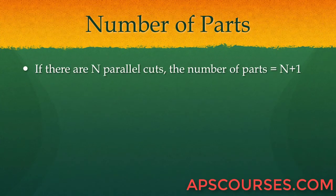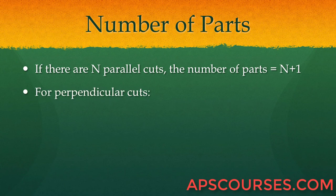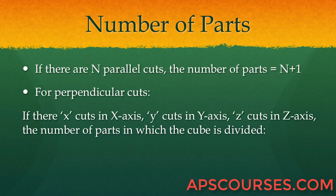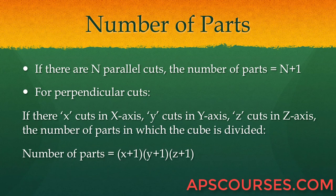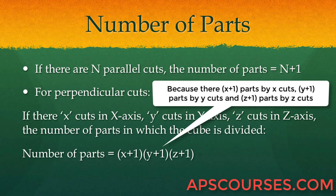If there are n parallel cuts, the number of parts into which the cube is divided is n plus 1. For perpendicular cuts, if there are x cuts along the x-axis, y cuts along the y-axis, and z cuts along the z-axis, then the number of parts is given by (x+1)(y+1)(z+1).